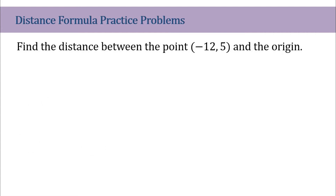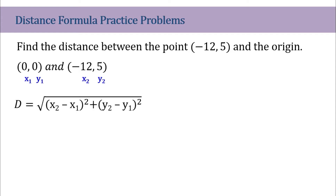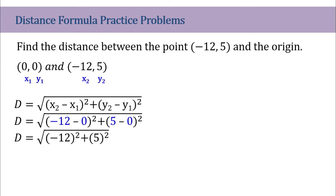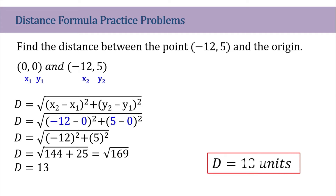Now let's find the distance between the point (-12, 5) and the origin. Same method — we will set a variable for the points. (0, 0) will be point 1 and (-12, 5) will be point 2. Write the distance formula, substitute the values, then simplify. We have the square root of negative 12 squared plus 5 squared. Negative 12 squared is 144 and 5 squared is 25. That gives us square root of 169. The square root of 169 is 13, so the distance between the two points is 13 units.